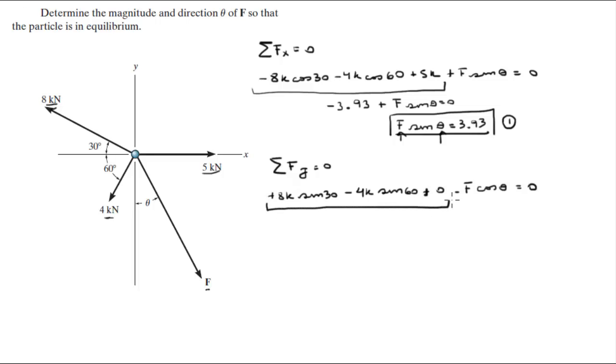So when you plug this into your calculator you get that this is equal to 0.536 minus f cosine of theta is equal to 0. So 0.536 is equal to f cosine of theta. This is my second formula.